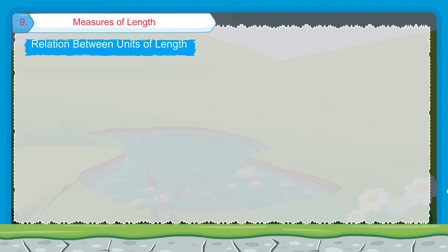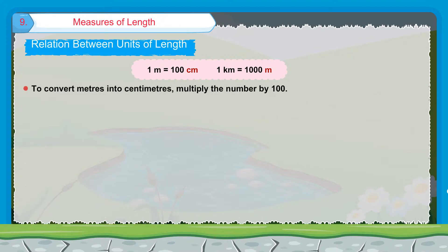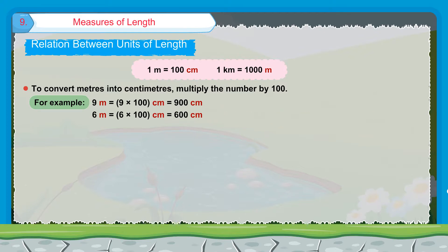Relation between units of length: 1 meter is equal to 100 centimeters. 1 kilometer is equal to 1000 meters. To convert meters into centimeters, multiply the number by 100. For example, 9 meters = 9 × 100 = 900 centimeters. 6 meters = 6 × 100 = 600 centimeters.